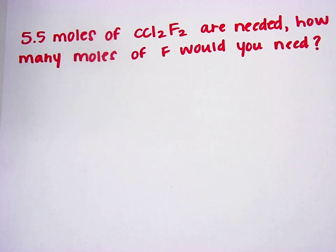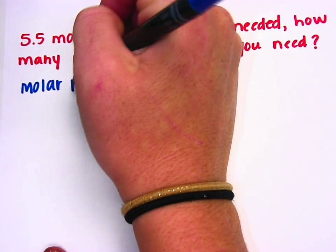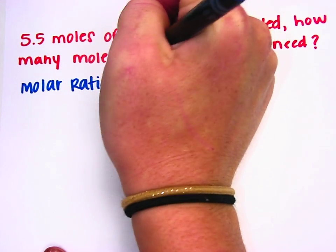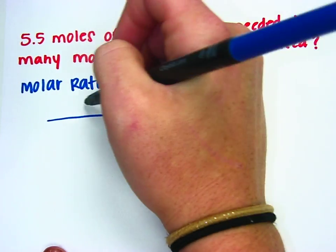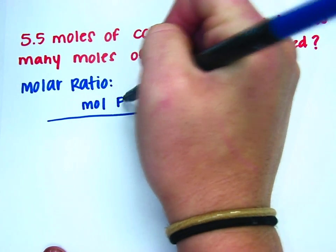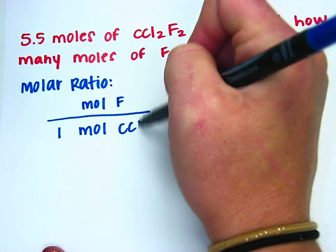I could ask you for a molar ratio for this problem, and if I asked you for that ratio, the ratio would be how many moles of fluorine there are in one mole of our whole thing, or basically in our cake.